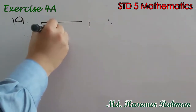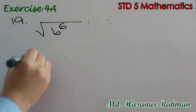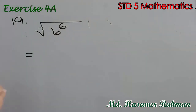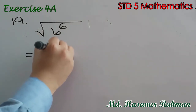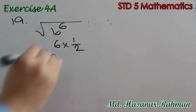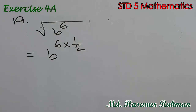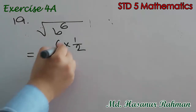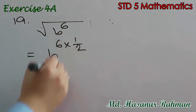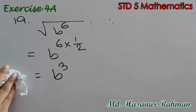Now number 19: square root of b to the power 6. Square root of b to the power 6 means b to the power 6 into half, because square root represents power as half. So 6 divided by 2 is 3, meaning b cubed is the answer of number 19.